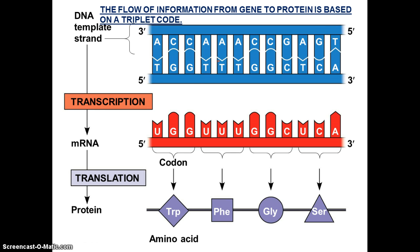The other strand is called the non-template strand, and we're not going to use that. For transcription, we're using the 3' to 5' strand. Wherever there's an A, there's going to be a U because there's no thymine in mRNA. Wherever there's a C, there'll be a G, and wherever there's a T, there'll be an A. Each codon is made up of three nucleotides, so there are 64 possible codon combinations.